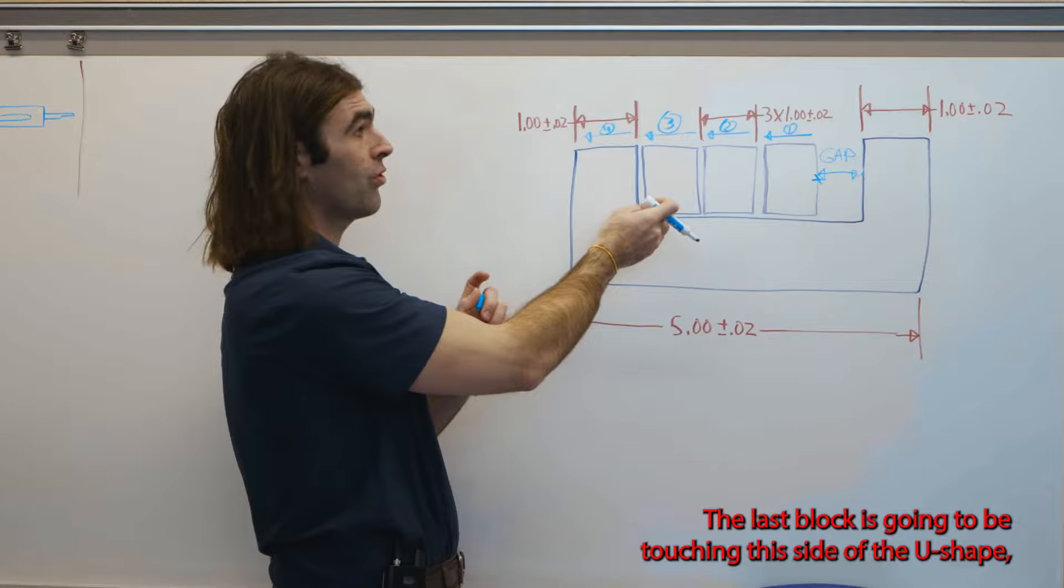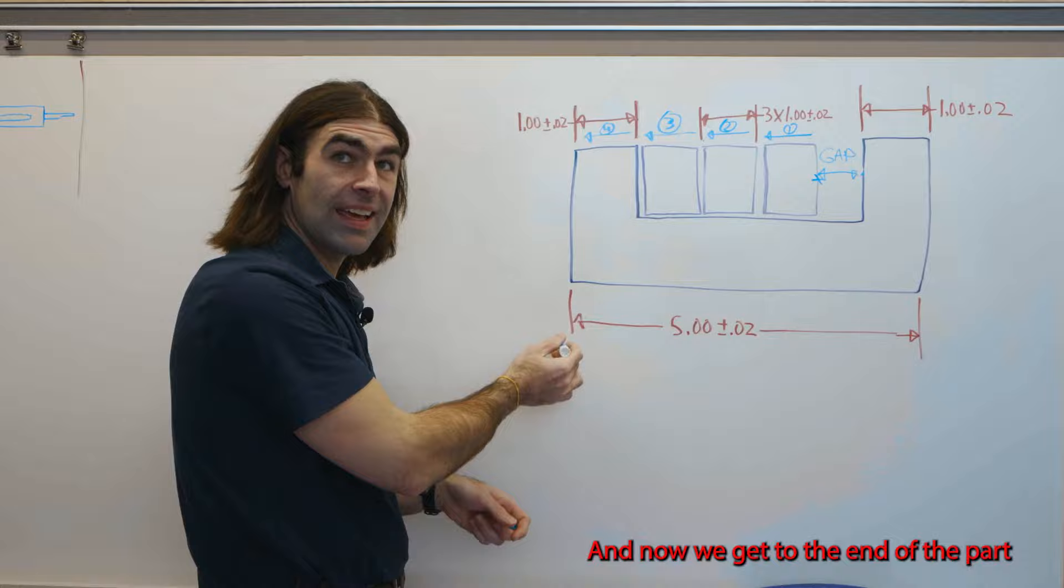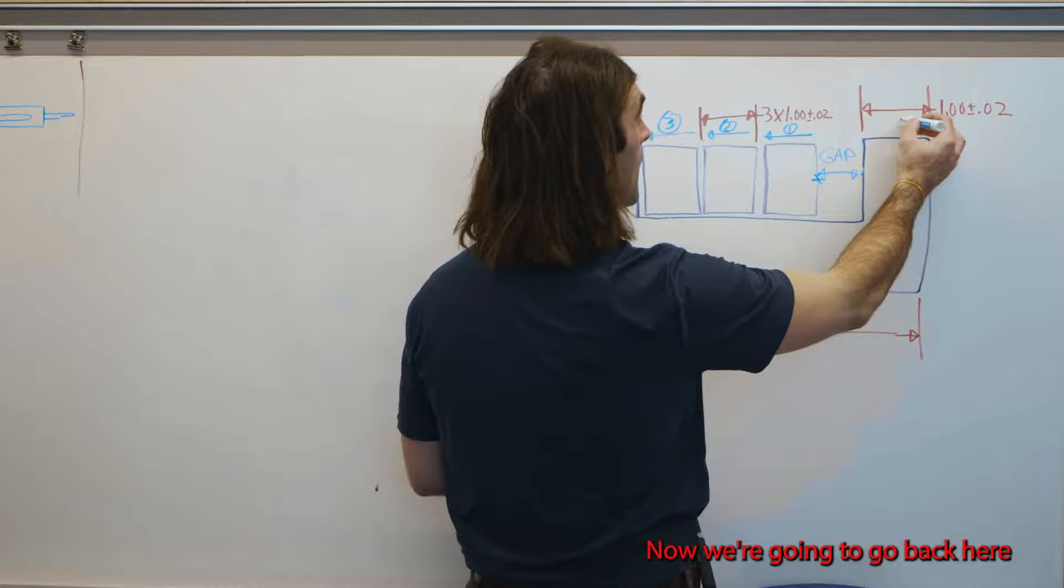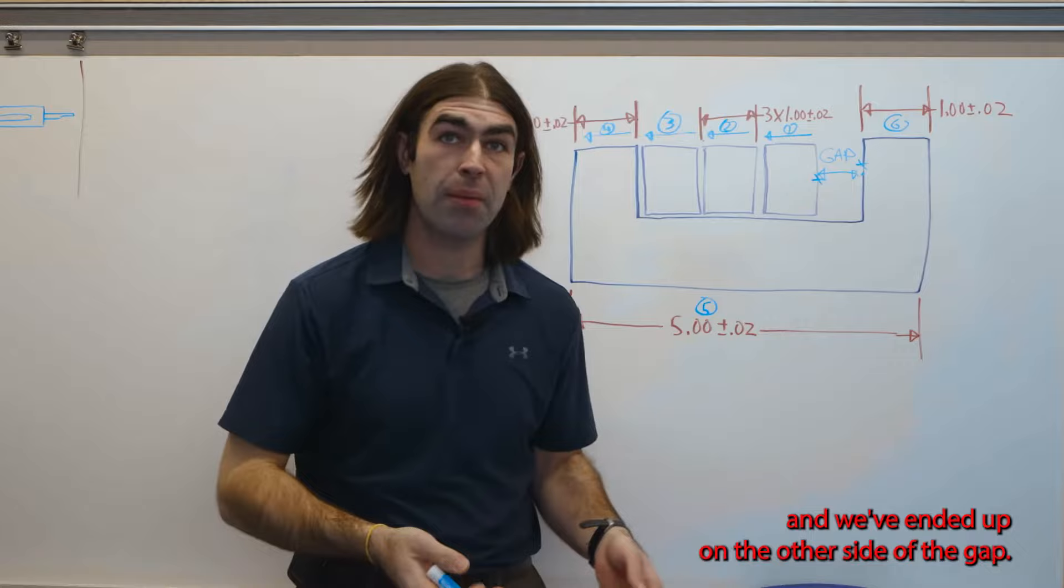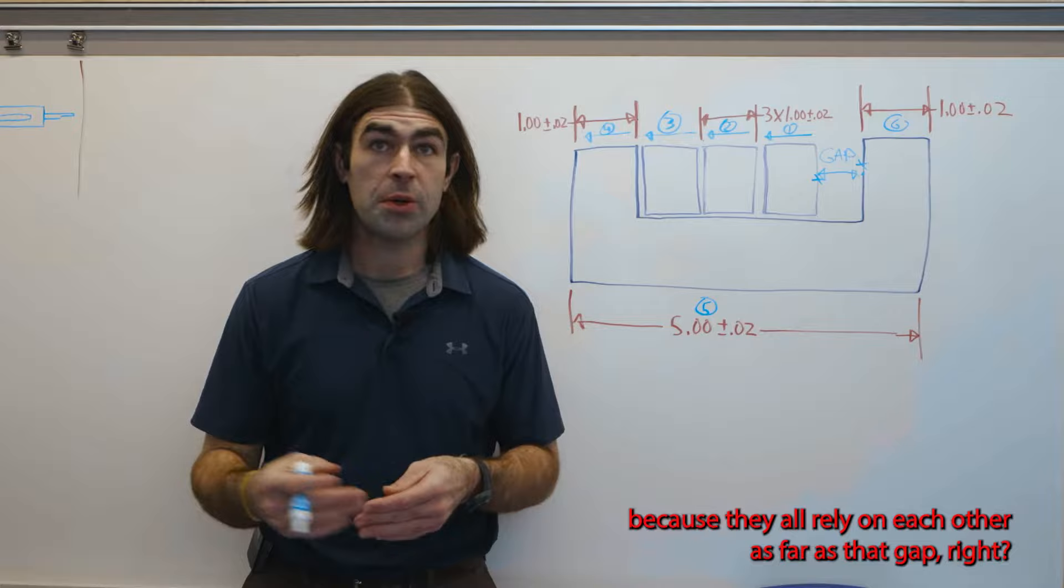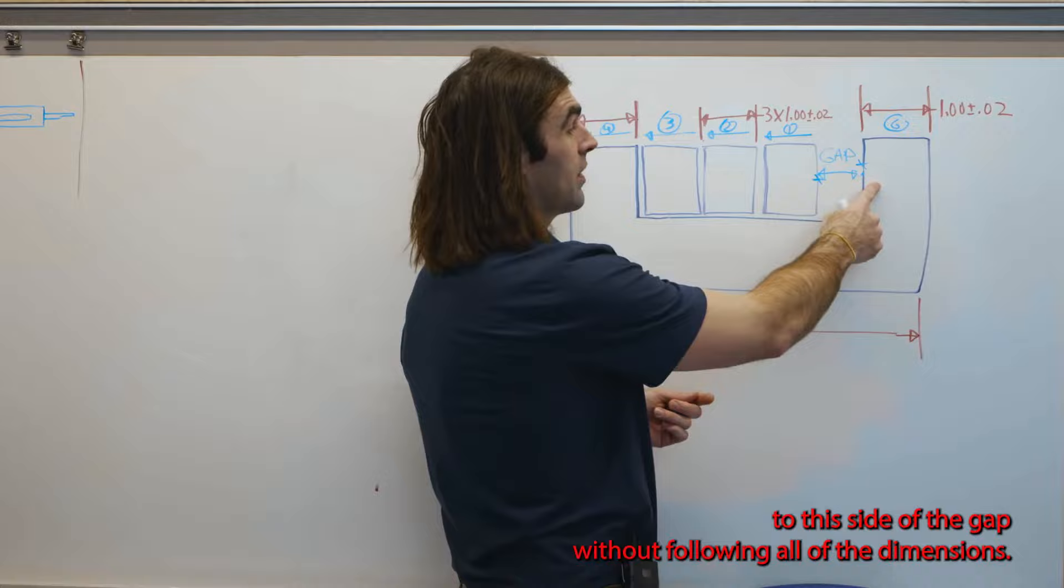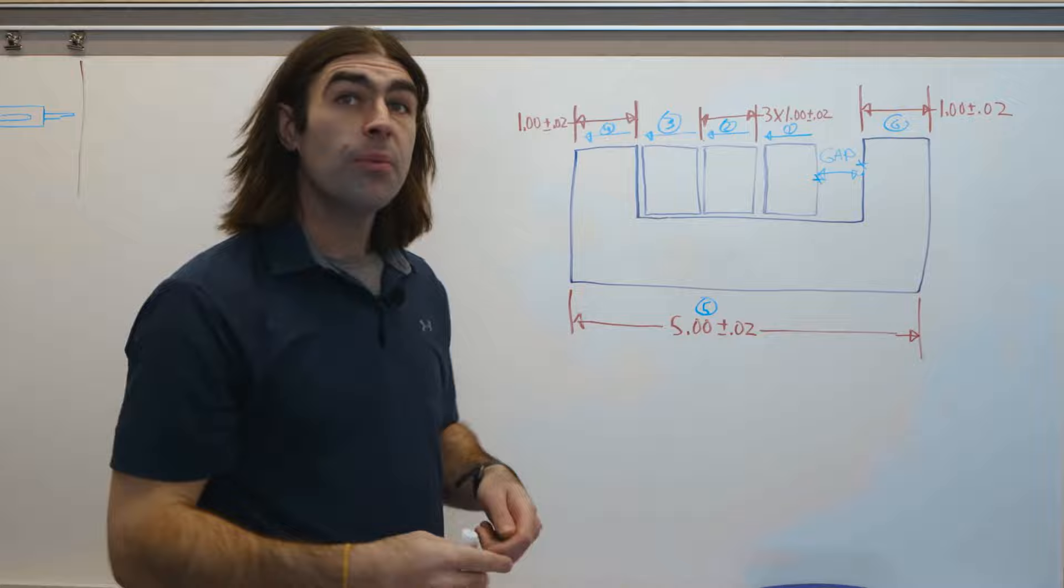The last block is going to be touching this side of the U shape. So we're going to take into account this dimension and now we get to the end of the part. So we can go back to where we started. So this is four, this is five. That brings us to this side of the part. Now we're going to go back here and we've ended up on the other side of the gap. Now we're going to take into account all of these dimensions because they all rely on each other as far as that gap. You have to take into account the overall dimension because there's no way to get from this side of the gap to this side of the gap without following all of the dimensions.